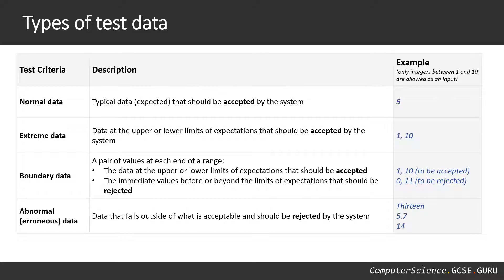Finally, abnormal or erroneous data is really ridiculous data that falls way outside of what's normal and should be heavily rejected. For a range of one to ten, 13 is beyond the limit and should be rejected. Even better, enter it as words — if I'm asking for a number, words should definitely be rejected. Use examples like that to demonstrate understanding of erroneous data.